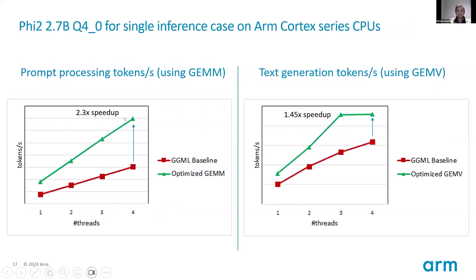Moving on to key results: we evaluated all our optimizations on ARM Cortex series CPUs. For the prompt processing part — generating the very first token — the optimized GEMM kernels improve tokens per second by about 2.3x over the baseline kernels of the llama.cpp-style C++ runtime. For the text generation part — all subsequent rounds after the first — the optimized GEMV operations improve tokens per second by about 1.45x over the baseline kernels.